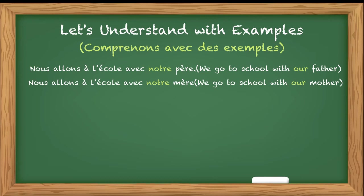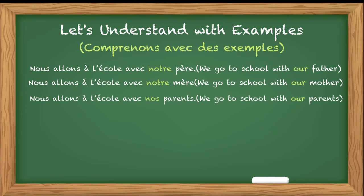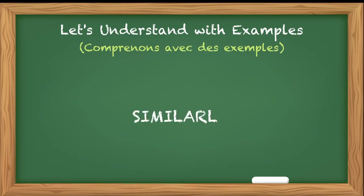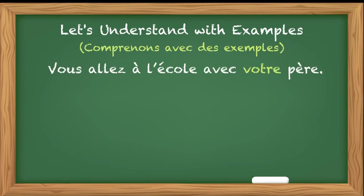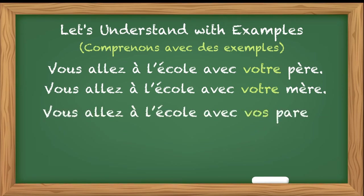One more sentence: 'We go to school with our parents.' Parents are plural, so we use nos — Nous allons à l'école avec nos parents. Similarly, if the possessor is vous, the sentences will be: 'Vous allez à l'école avec votre père.' 'Vous allez à l'école avec votre mère.' And 'Vous allez à l'école avec vos parents.'